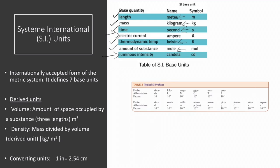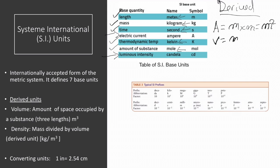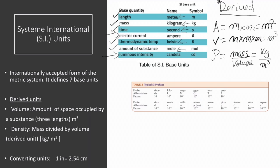We can also multiply or divide these base units to get derived units. For example, if we want to get the unit of area, we multiply the base unit of length two times, and meter times meter is meter squared. For volume, we multiply the length unit three times to get meter cubed. We can also get the units of density, which is defined as mass divided by volume — that would be kilogram divided by meter cubed.